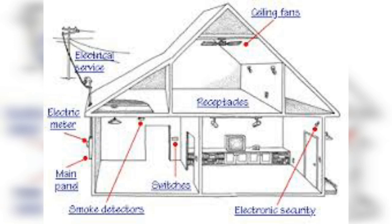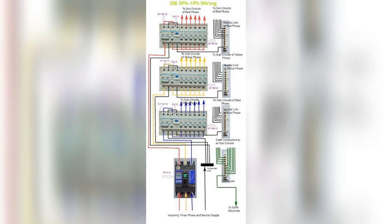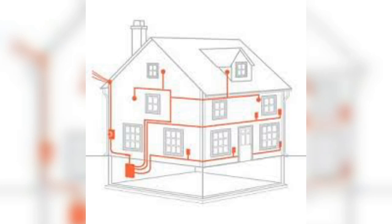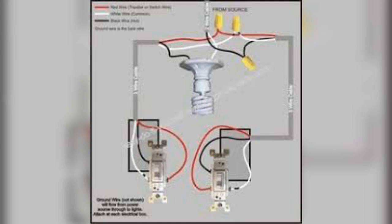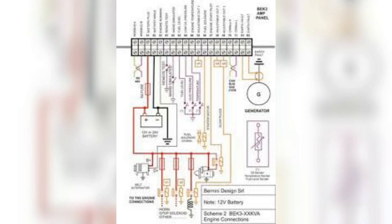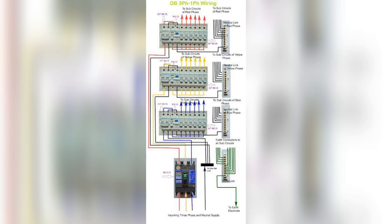Hello, our topic today is systems of house wiring. House wiring is generally done within two systems: the tree system or the ring system. In the tree system, the L and N wires from a cable are connected to two bus bars in a distribution box.